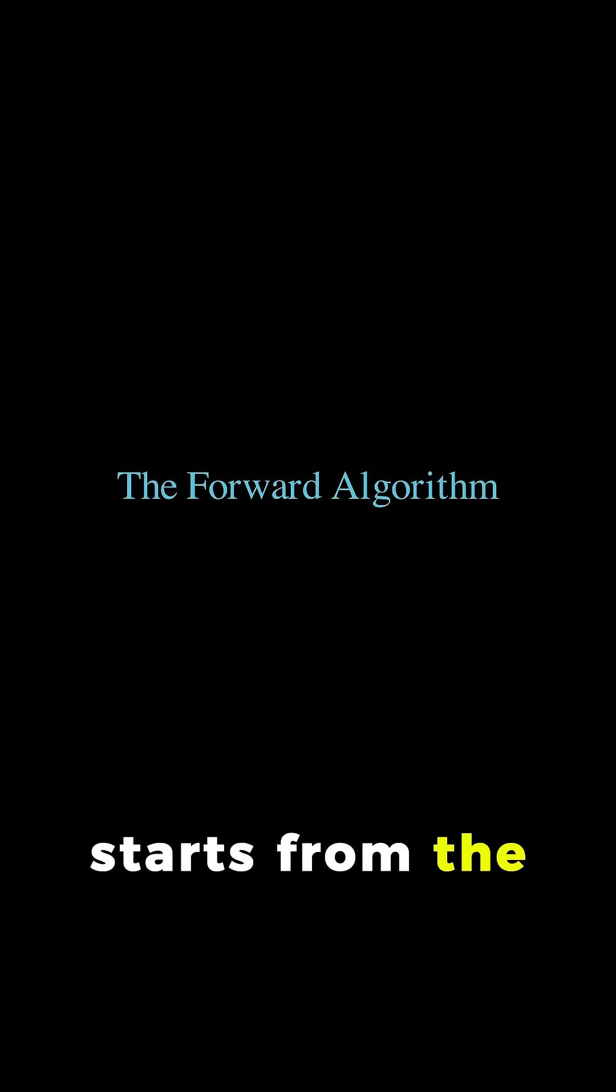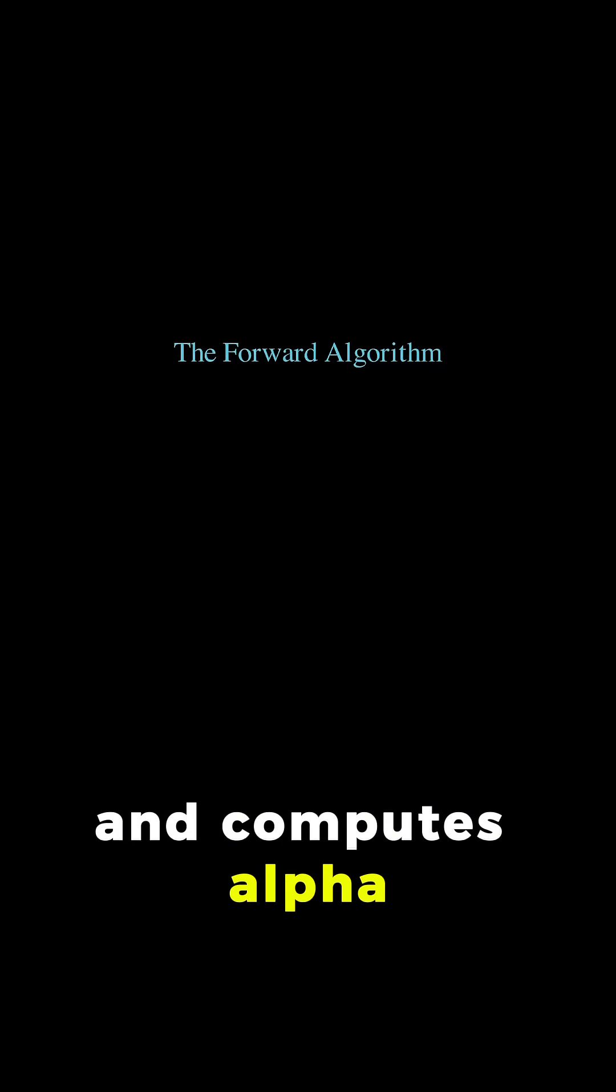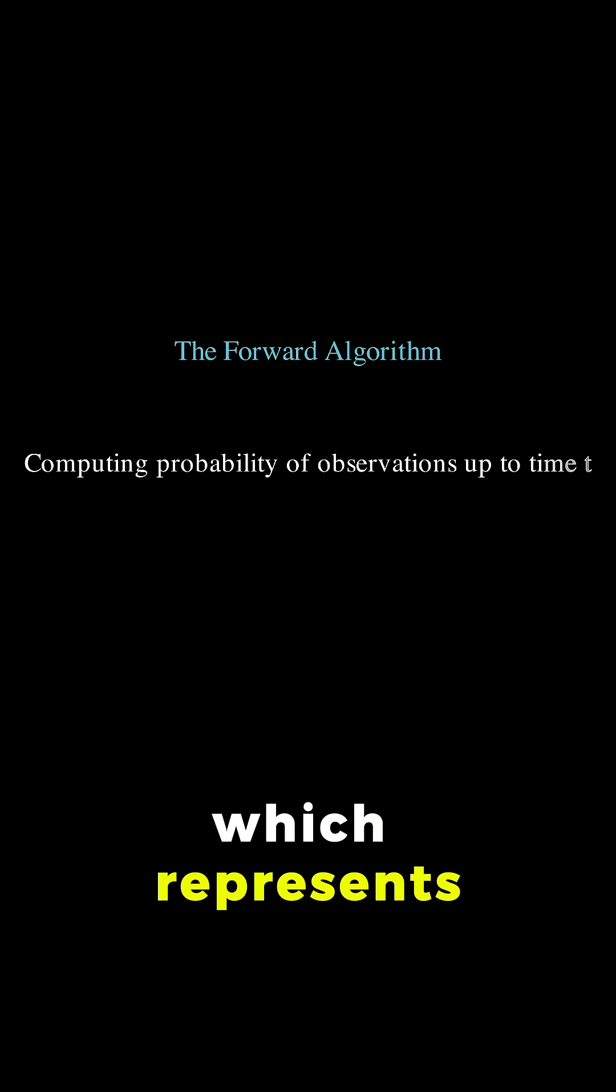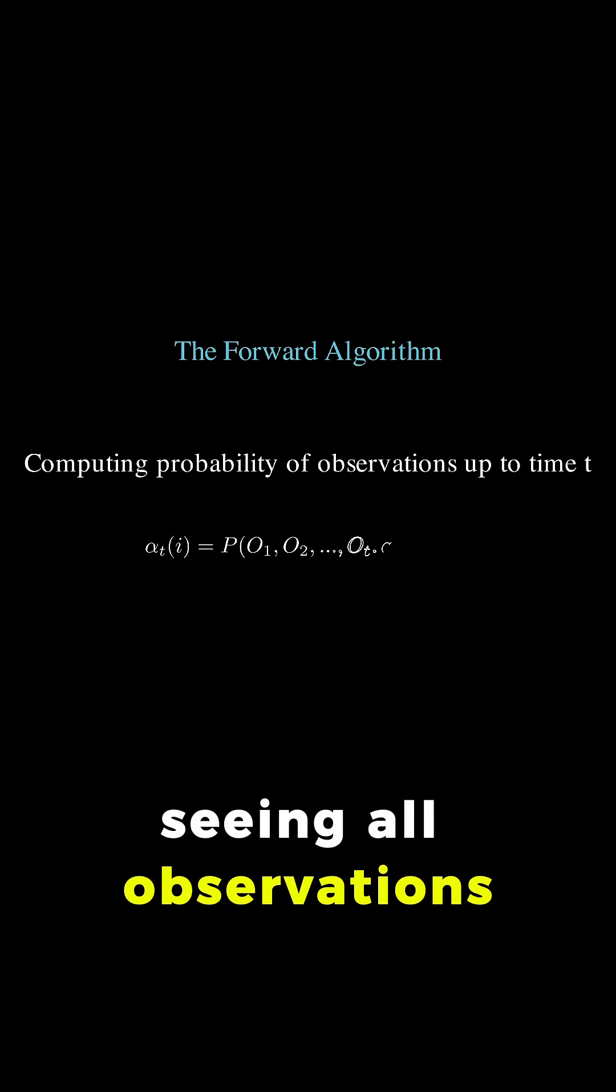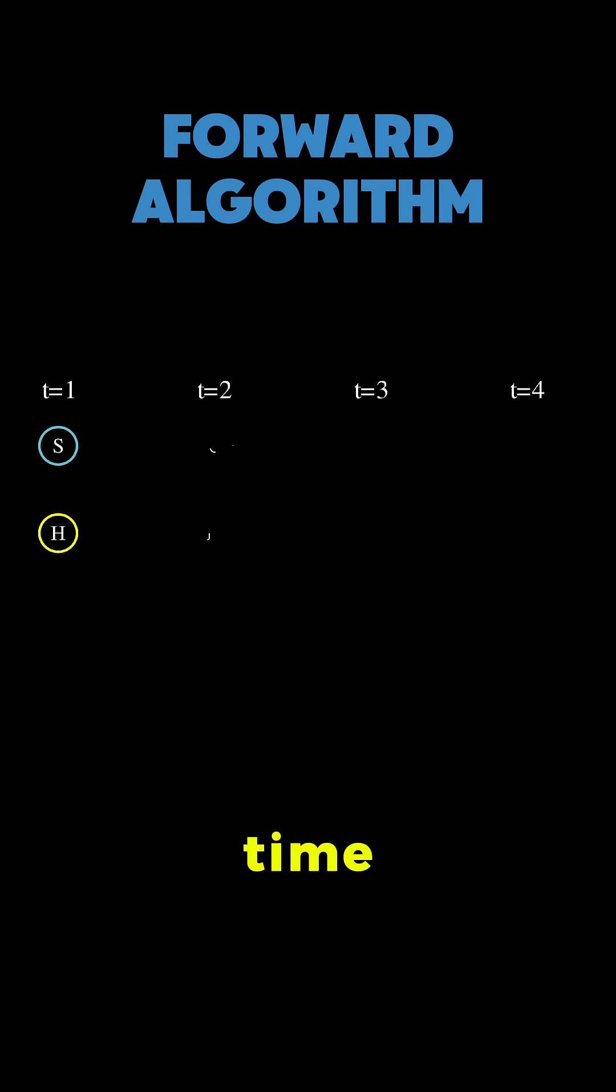The forward algorithm starts from the beginning and computes alpha t of i, which represents the probability of seeing all observations up to time t and being in state i at that time.